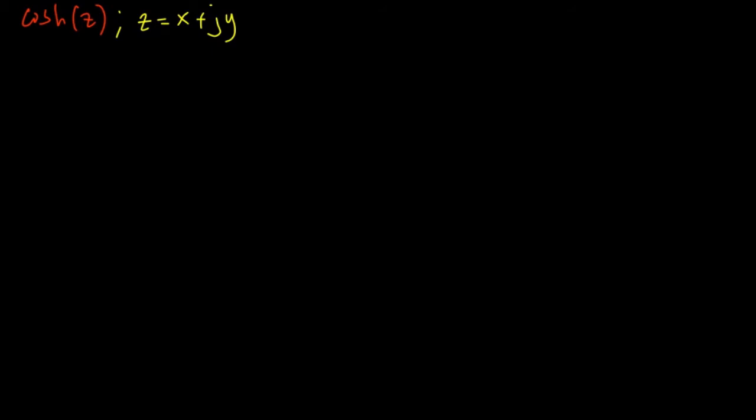So we have here, we need to find the hyperbolic cosine of Z, in which Z is equal to X plus J of Y. First we need to establish our identities for this.